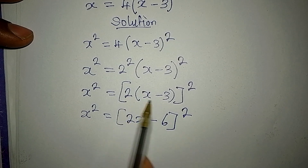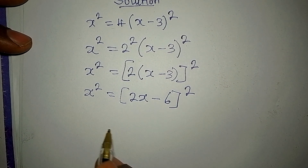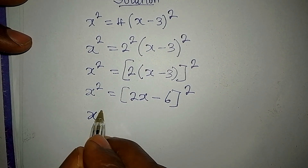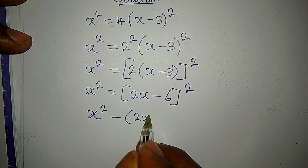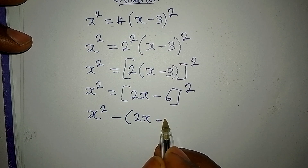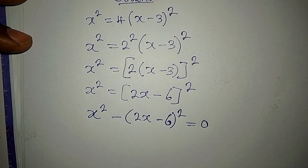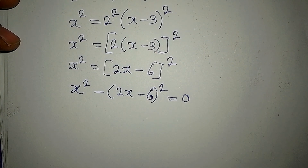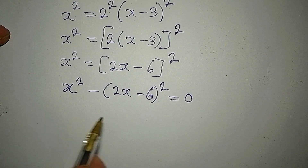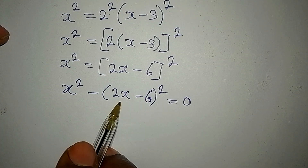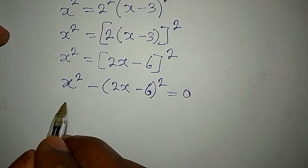Now let's bring everything to the same side, so we have x squared minus (2x minus 6) squared equals 0. From here I can apply difference of two squares, considering x squared as one term and (2x minus 6) squared as the other term.